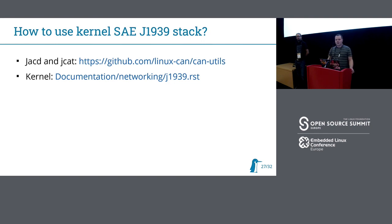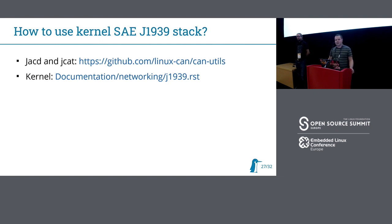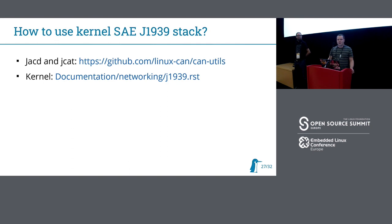In the kernel we have a documentation file at Documentation/networking/j1939. You can read as much as possible from it — there are some examples and motivation explanations. If you're missing some information in this file, please contact us or just send patches.